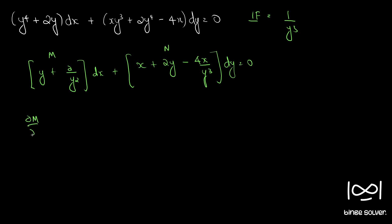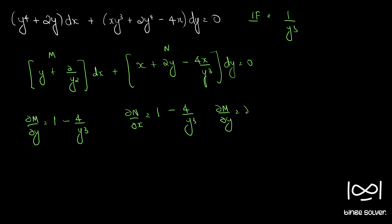So dou M by dou y becomes 1; the differential of 2 by y squared is minus 2 by y cubed, so that becomes minus 4 by y cubed, giving 1 minus 4 by y cubed. And dou N by dou x is 1 minus 4 by y cubed. As you can see, dou M by dou y equals dou N by dou x. Therefore, this differential equation is exact.